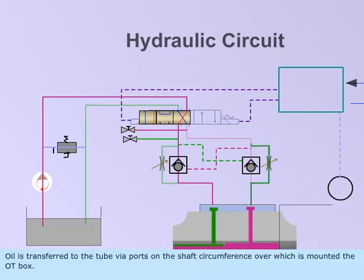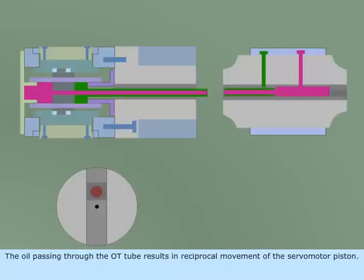Oil is transferred to the tube via ports on the shaft circumference over which is mounted the OT box. The oil passing through the OT tube results in reciprocal movement of the servo motor piston.